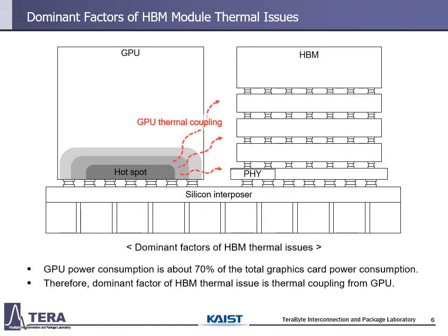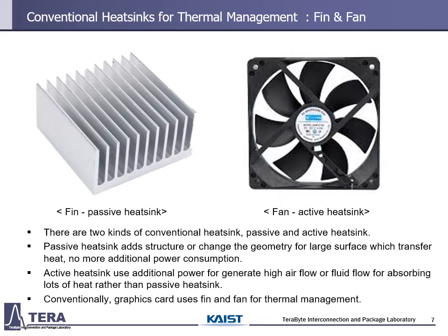As everyone knows, the GPU is the hottest place in the graphics card. Power consumption of the GPU is about 70% of the total graphics card power consumption. Therefore, the GPU thermal coupling is the dominant factor of HBM thermal issues. To prevent thermal issues of HBM, it needs to cool down the GPU powerfully. As mentioned earlier, the algorithmic thermal management method, thermal throttling, degrades computing performance.